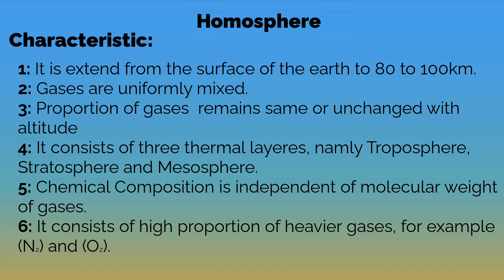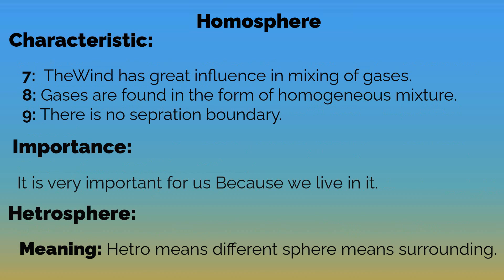The chemical composition is independent of the molecular weight of gases — meaning it does not happen that lighter gases stay above and heavier gases stay below. Instead, both light and heavy gases are equally and uniformly distributed everywhere. The homosphere has a high proportion of heavier gases such as nitrogen and oxygen, and gases are mixed by wind. Gases are found in the form of a homogeneous mixture.